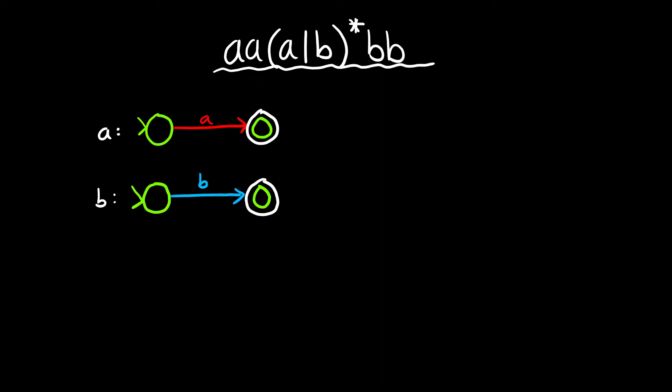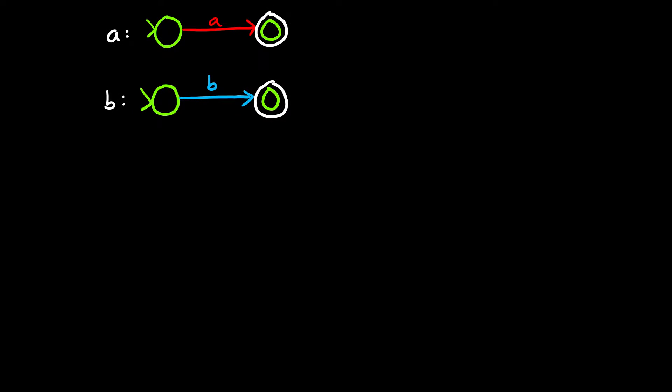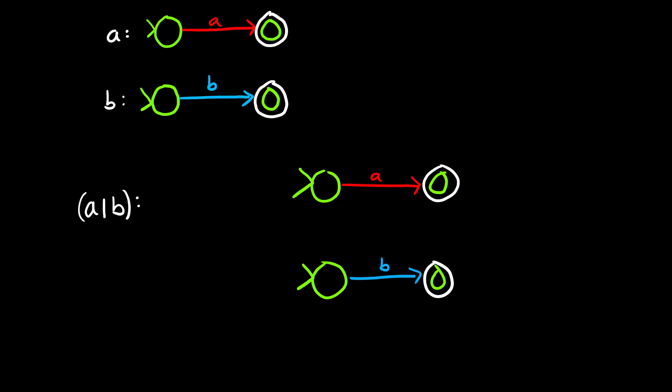Inside of our parentheses we have a union. Because they're inside the parentheses, they take precedence before the concatenation and before the Kleene star. So let's do this union with these two A and B machines. Let's rewrite them in the same space and see what we can do to them together. So now we have both of our machines right next to each other — the machine that accepts A and the machine that accepts B.